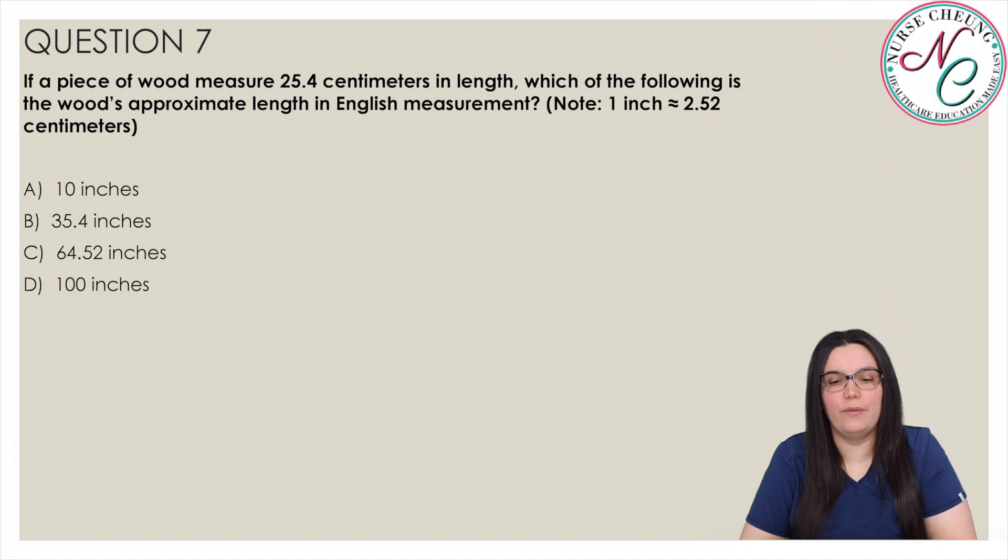A piece of wood measures 25.4 cm in length. Which of the following is the wood's approximate length in English measurement? Please note, 1 inch is approximately equal to 2.52 cm. Is it A, 10 inches, B, 35.4 inches, C, 64.52 inches, or D, 100 inches? And the correct answer is A, 10 inches.